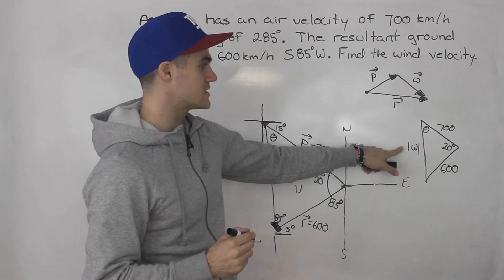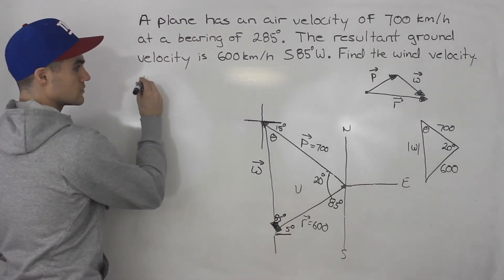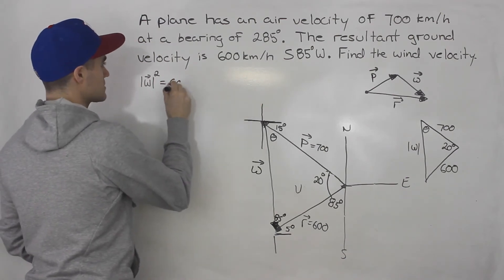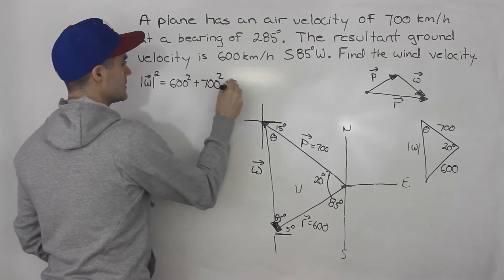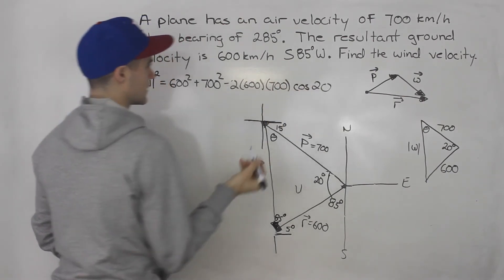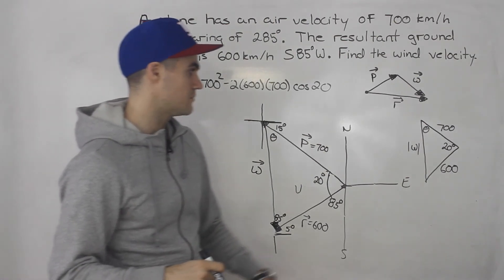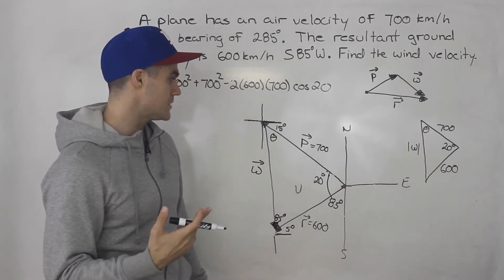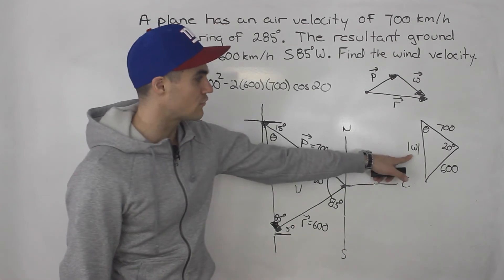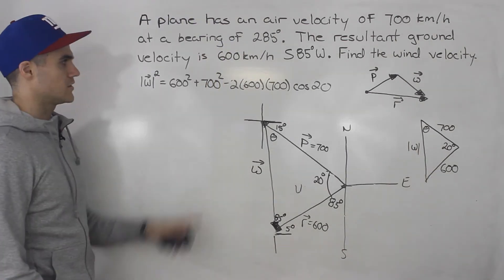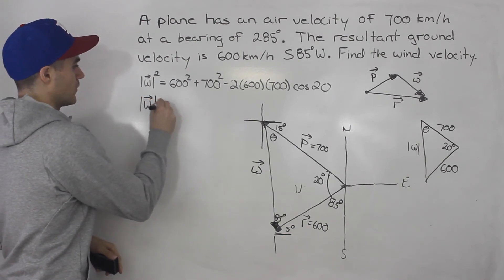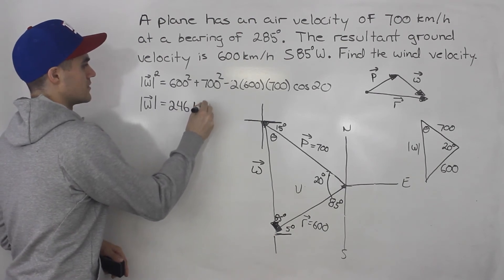To find the wind speed, we use the cosine law since we're not guaranteed a right triangle. The wind speed squared equals 700 squared plus 600 squared minus 2 times 600 times 700 times cosine of 20 degrees. Inputting the right side into the calculator and taking the square root gives a wind speed of 246 kilometers per hour.